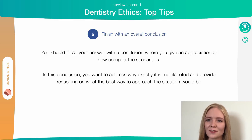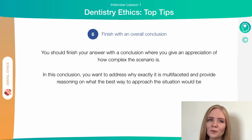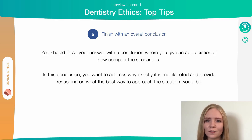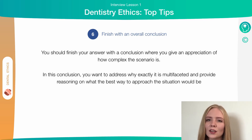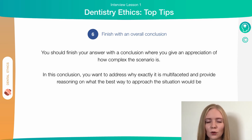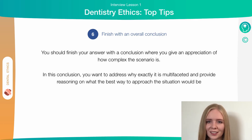Our final tip is to finish with an overall conclusion. What you want to do is show in your answer that you understand that it's a really complicated scenario and why it's important to consider all the influencing factors when making a decision about how to proceed. You can show that you understand it's a difficult scenario to approach, but how you think it would be best to do this, taking into account all the factors you've discussed and the different things you think are necessary to consider.